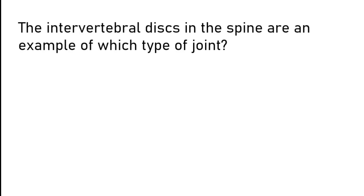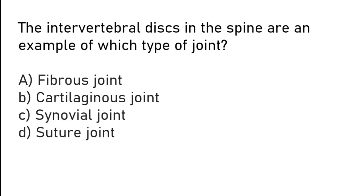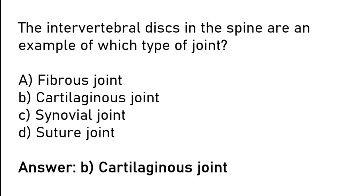The intervertebral discs in the spine are an example of which type of joint? Fibrous joint, cartilaginous joint, synovial joint, or suture joint. The correct answer is option B: the intervertebral discs in the spine are an example of a cartilaginous joint.